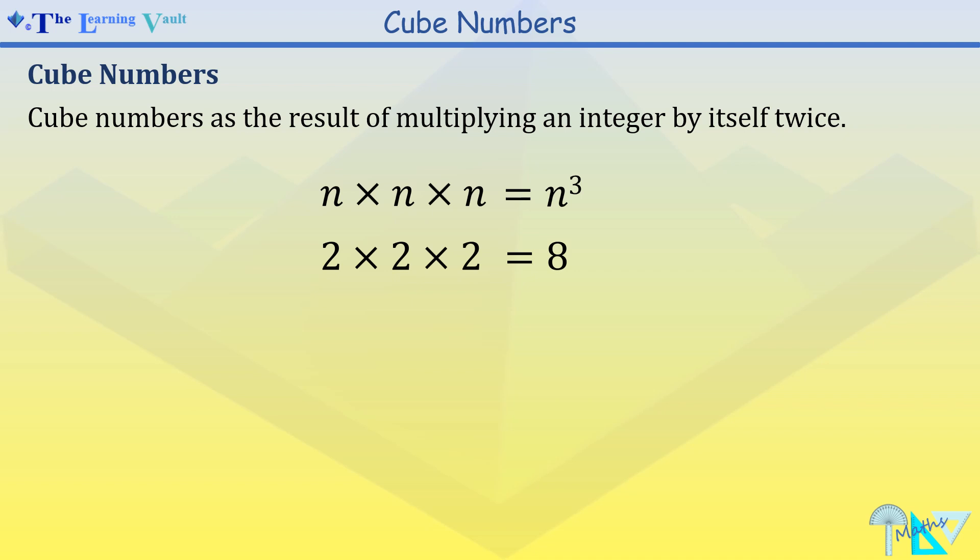Unlike square numbers, when we have negatives multiplying as cube numbers, we have an answer that is negative. So negative 2 times negative 2 times negative 2 equals negative 8.